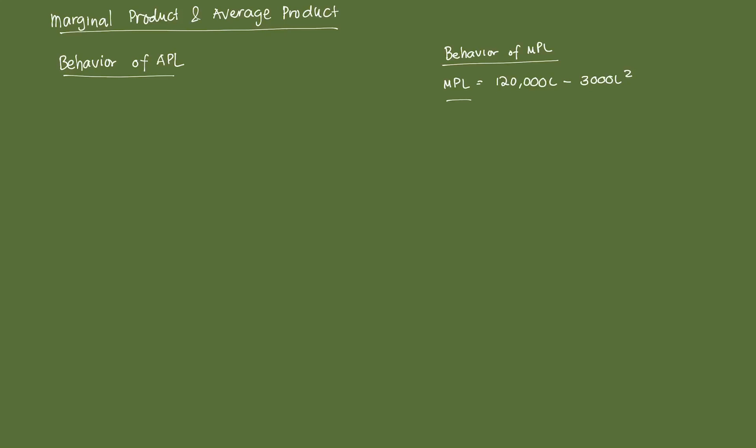In this video, we're going to link marginal product and average product in short-term production. If you haven't seen the last video, we had an example on short-term production. In this video, we're going to link the marginal product of labor and the average product of labor, which we have yet to compute. There is some form of link between these two functions that can be interesting in the context of short-term production.